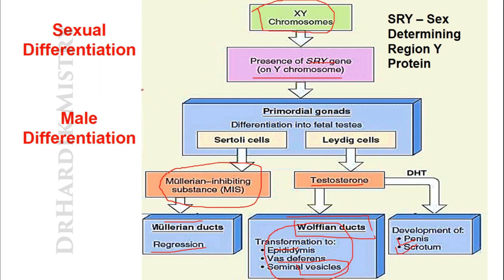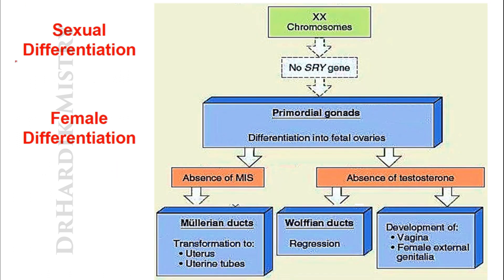In female differentiation, the neutral fertilized ovum is converted to female characteristics. Females have two X chromosomes and no Y chromosome, so there is no SRY gene. Due to the absence of SRY, the primordial gonads differentiate into fetal ovaries.